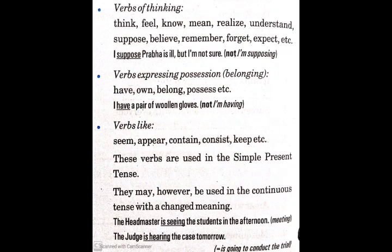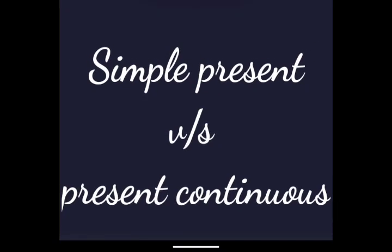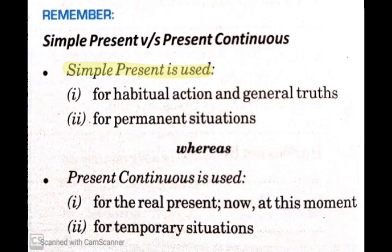We learn the difference between simple present and present continuous — where we have to use which one. Simple present is used for habitual actions, general truths, and permanent situations. Whereas present continuous is used for the real present — now, at this moment — and for temporary situations. Hope that you are clear with simple present and present continuous tense. In the next videos we will be learning about the next types of present tenses. Thank you, students.